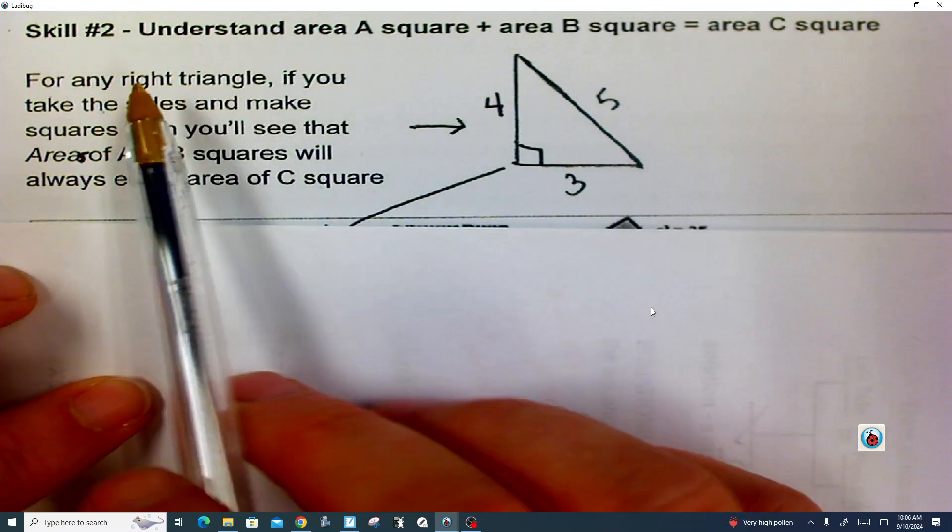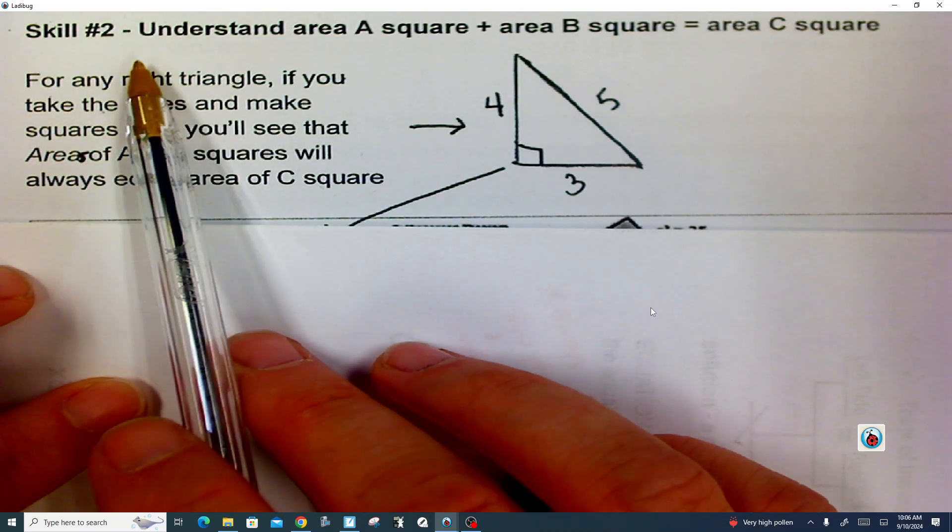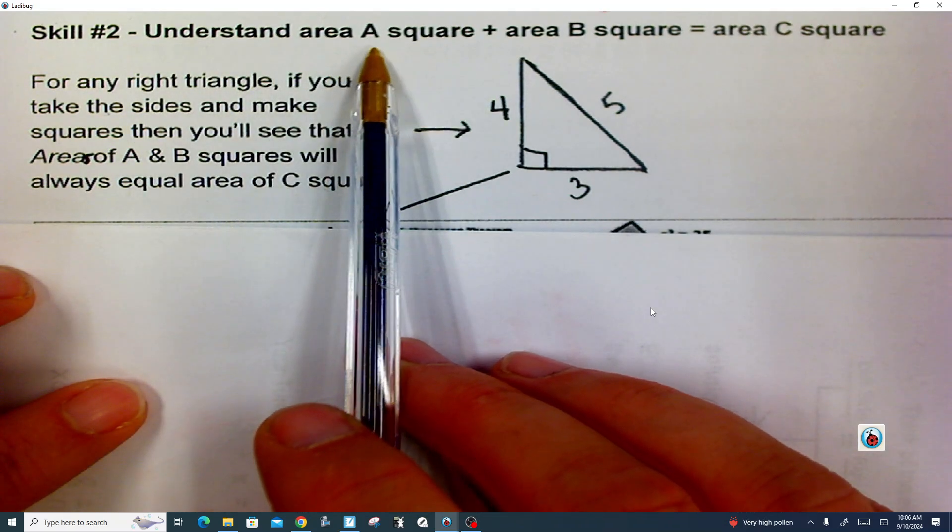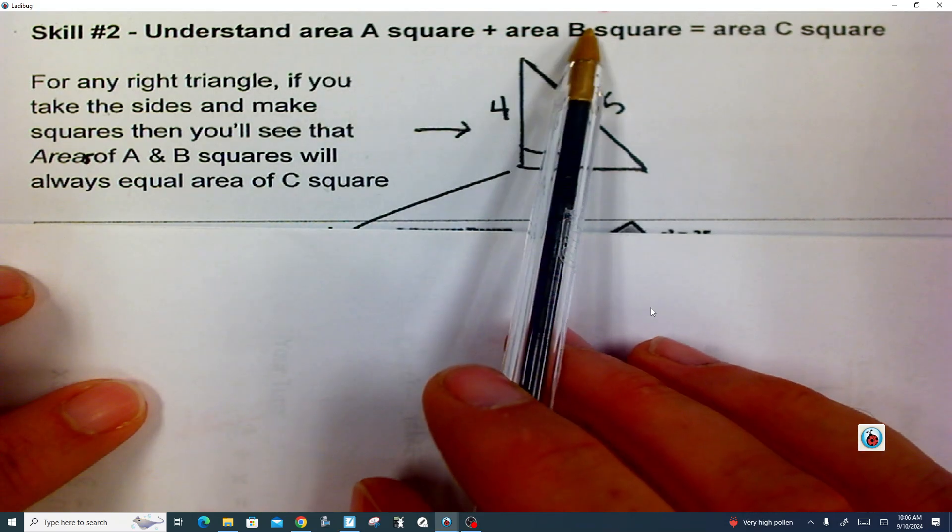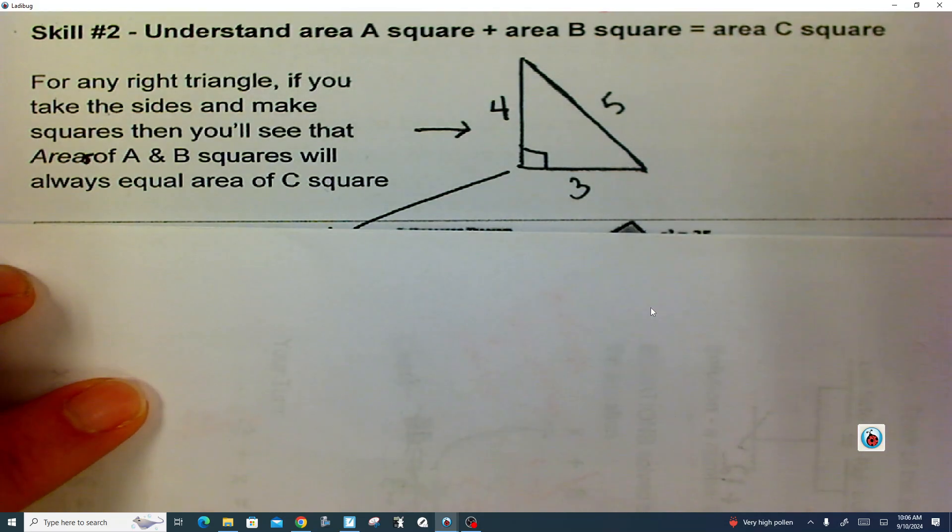All right, so let's take a look at Pythagorean Theorem. This is the second skill that we're looking at on our notes packets here, and we need to understand that A square, the area of A square, plus the area of B square, is going to equal the area of C square. And we're like, what area? What are we talking about in squares?